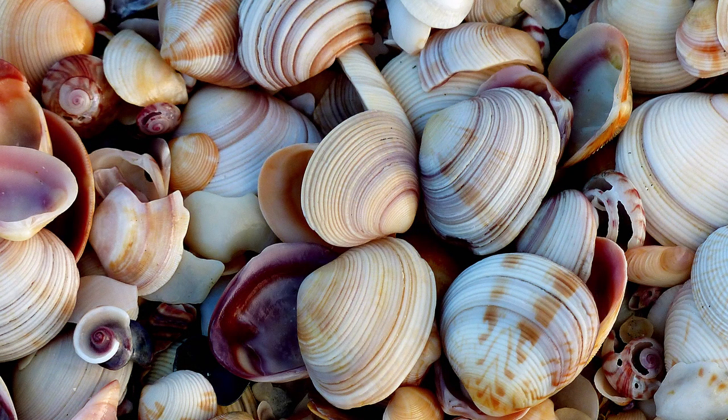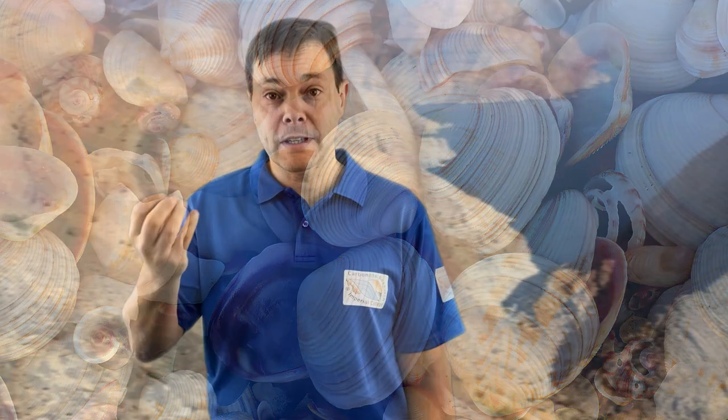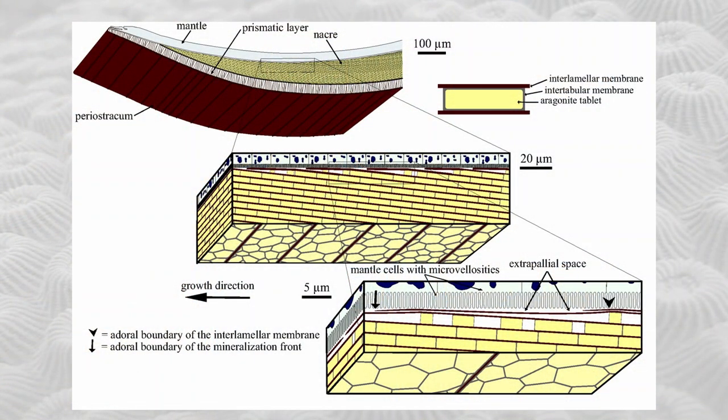But how about biotically controlled precipitation? That's a completely different beast. Here we're talking about an organism that precipitates calcium carbonate for a function. If you look at these shells on a beach, they're clearly precipitated for a function — protection — to protect the animal from predation. That is a very complicated process. If you look at the crystalline structure of these calcite or aragonite shells, they're extremely complex, with multiple layers having different crystal orientations, all controlled by the organism.